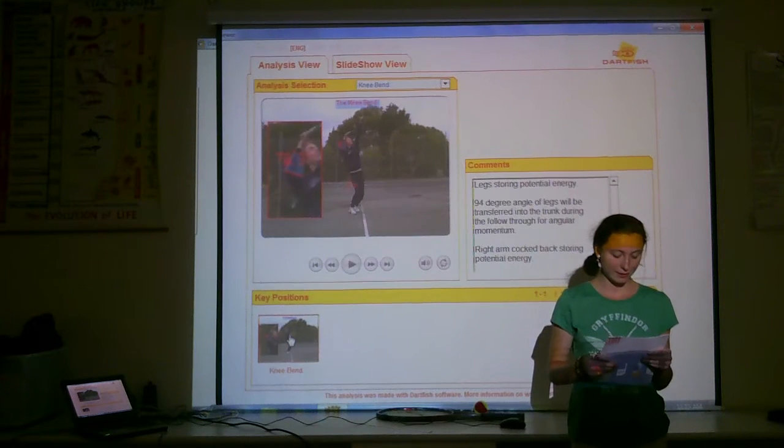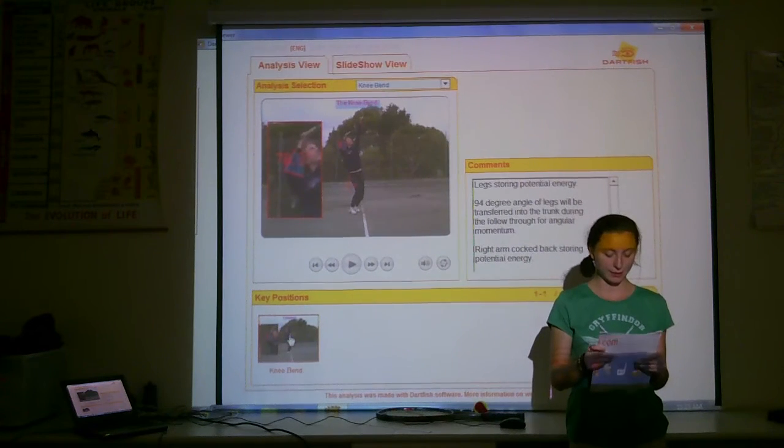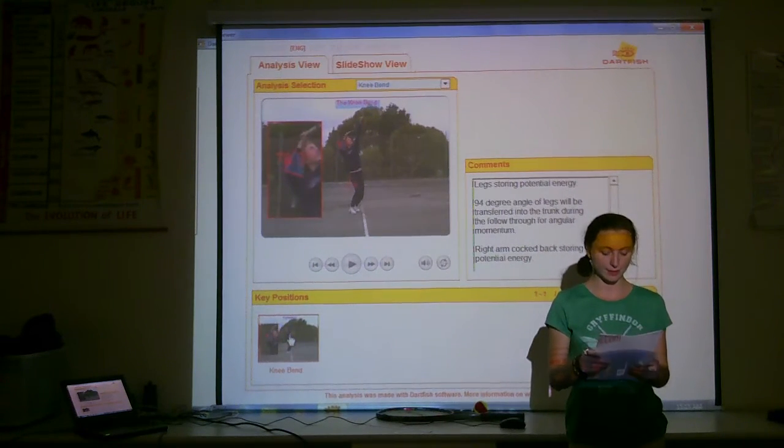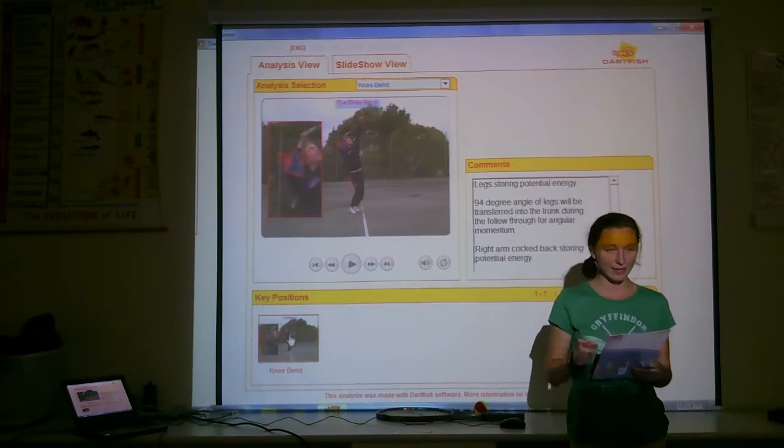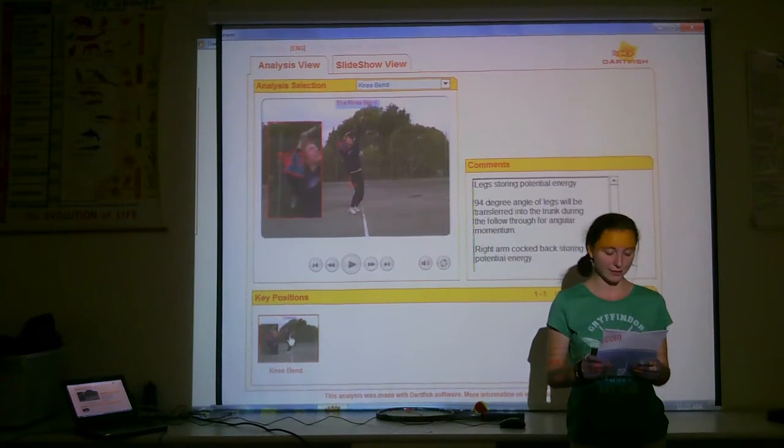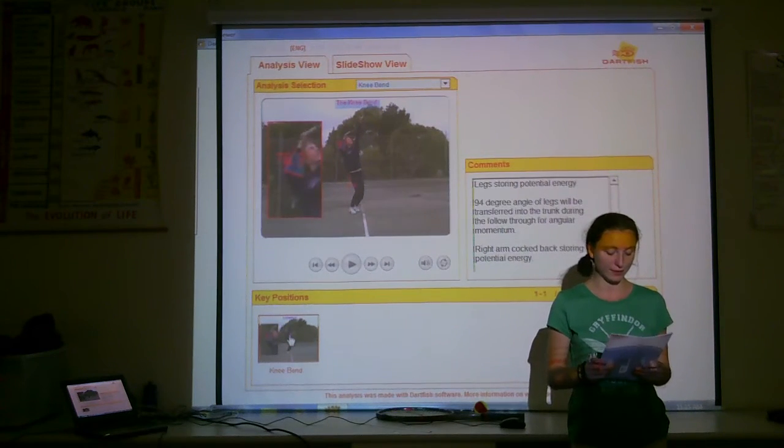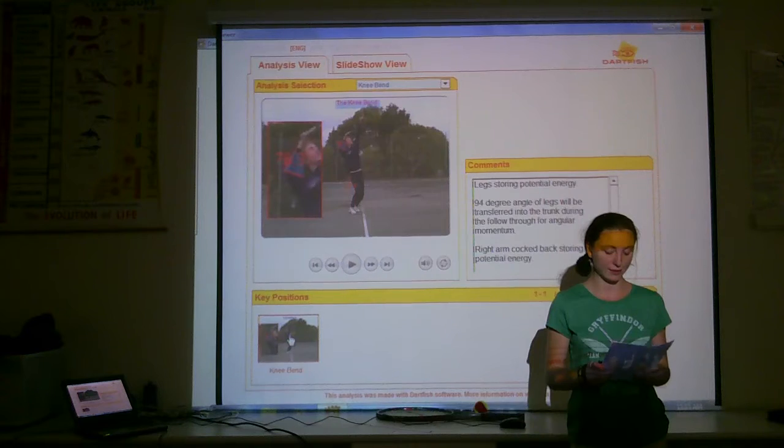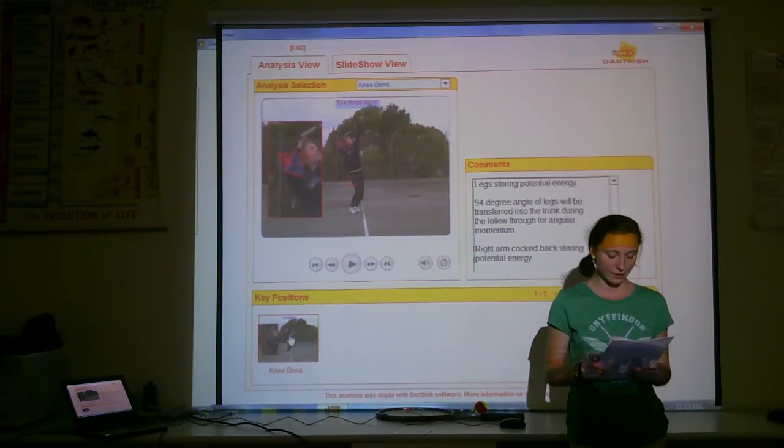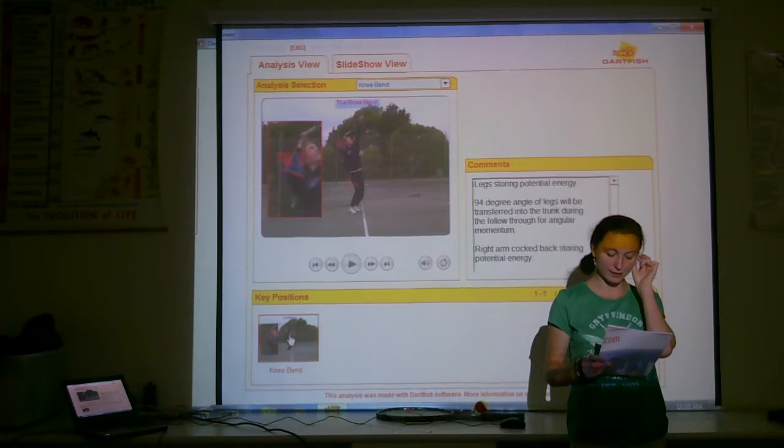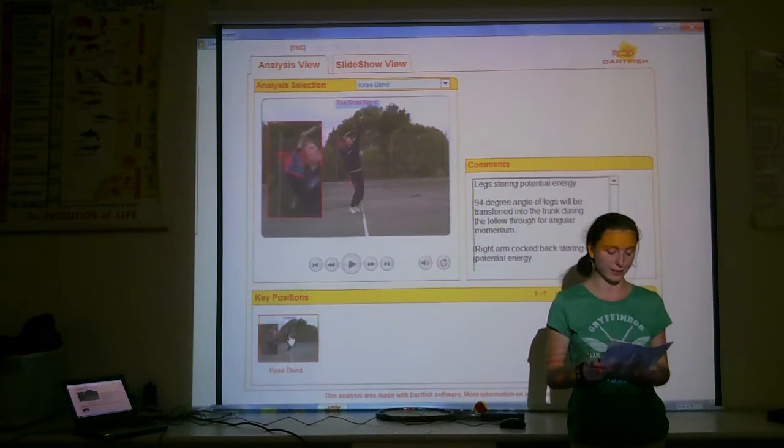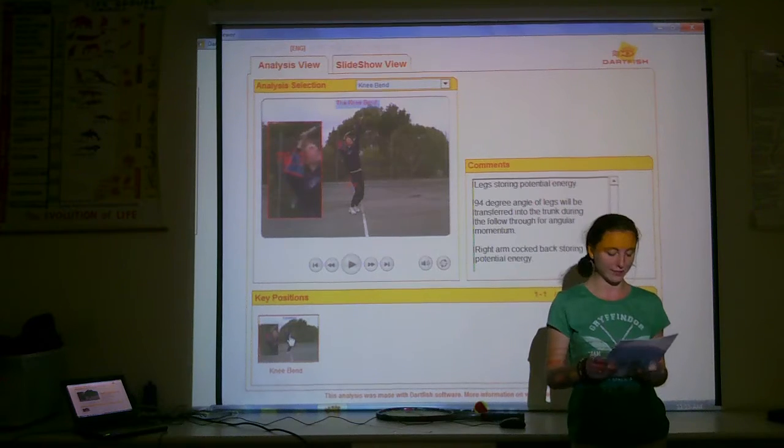In this position, the bent legs are storing potential energy with the quadriceps, hamstrings, and the gastrocnemius. This will be converted to kinetic energy as the potential energy produces enough force to overcome the inertia of the entire body as the movement continues through to the follow-through. The legs bend at an angle of about 94 degrees. This angle will assist in the transference of angular momentum through the trunk of the body and the medial transverse plane rotation.